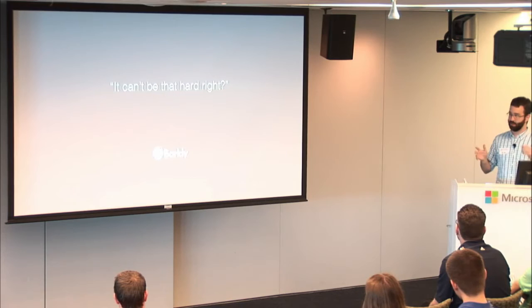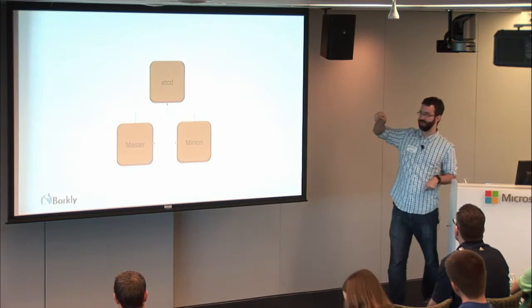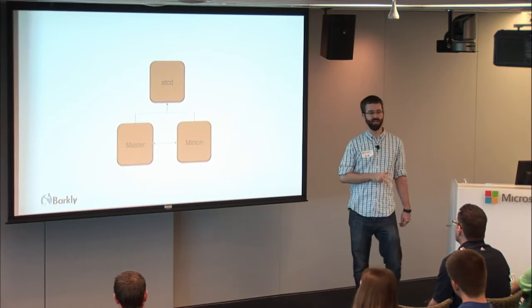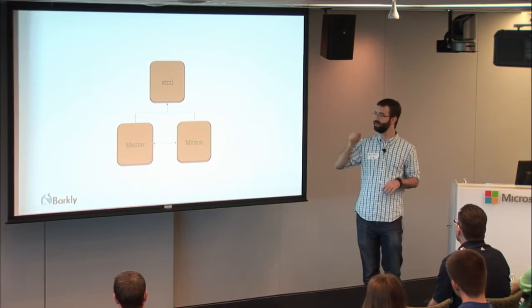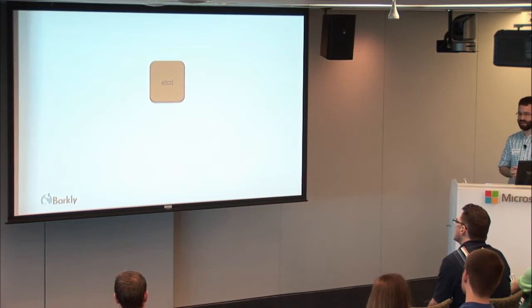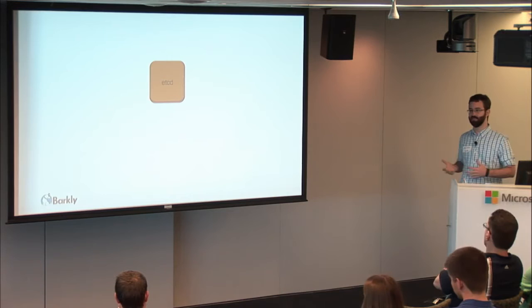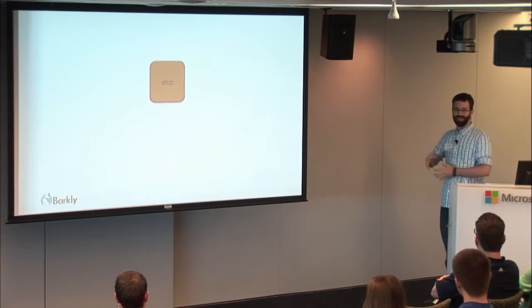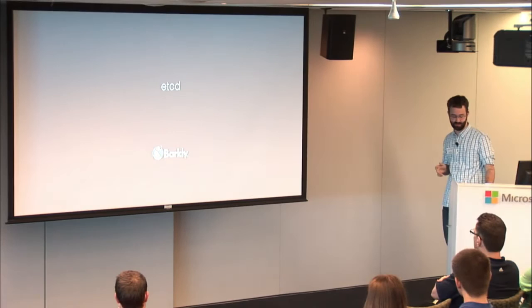Kubernetes has three main components: etcd, which is your key value store; the masters, which make all the decisions; and the minions, which run all your actual pods and containers. I knew that if I wanted to build something that could scale, I needed a good store. So I built a pretty solid etcd first.